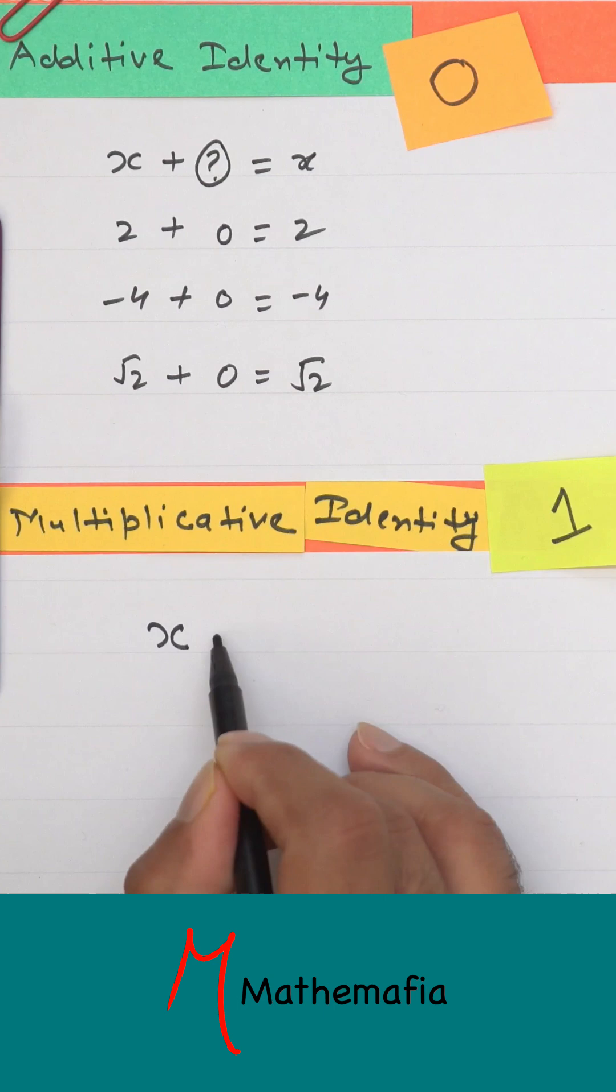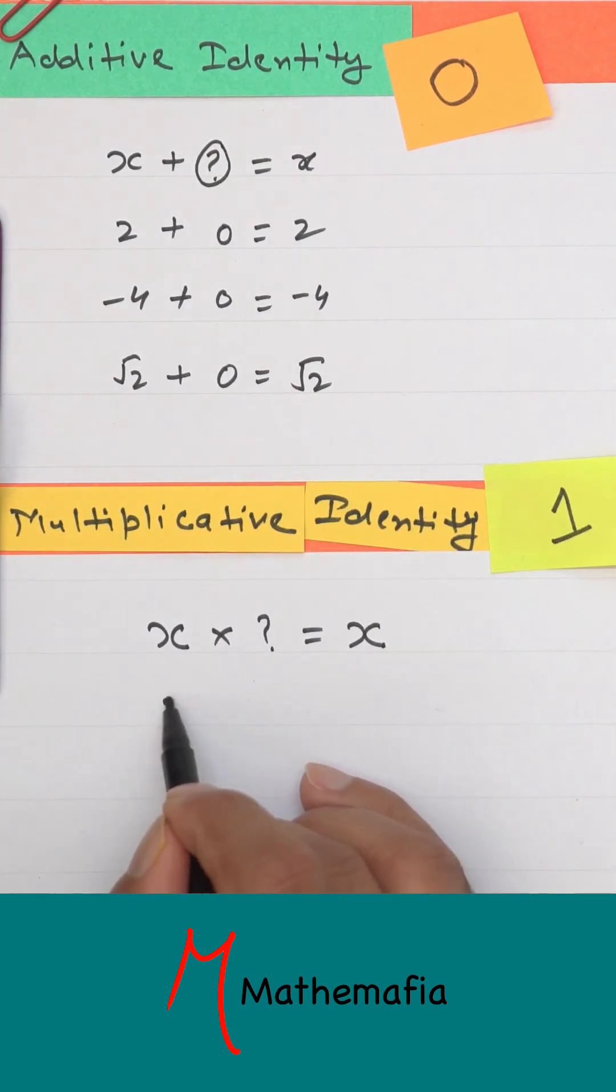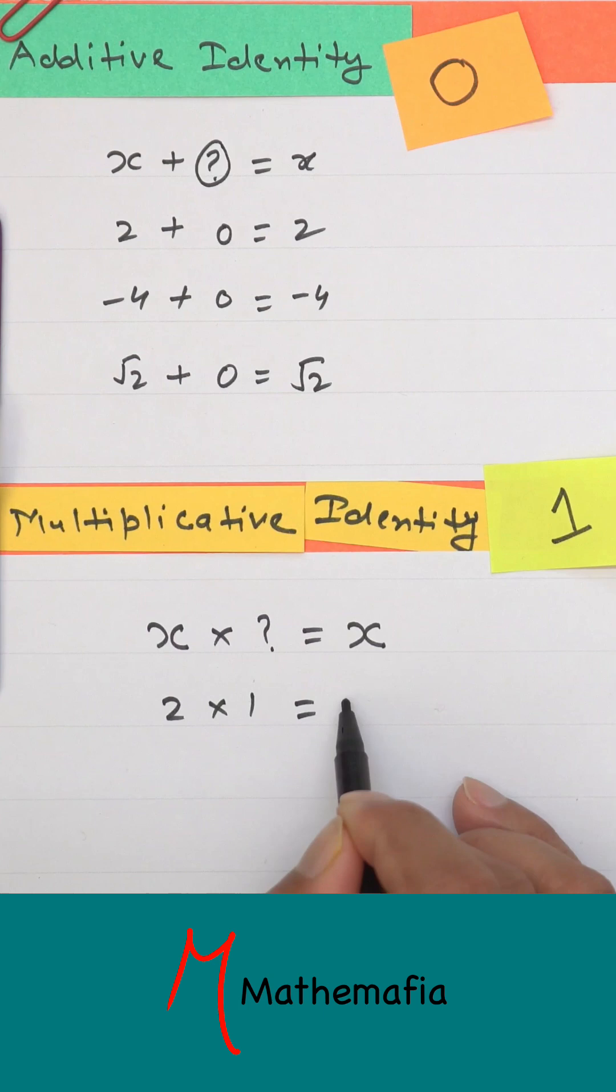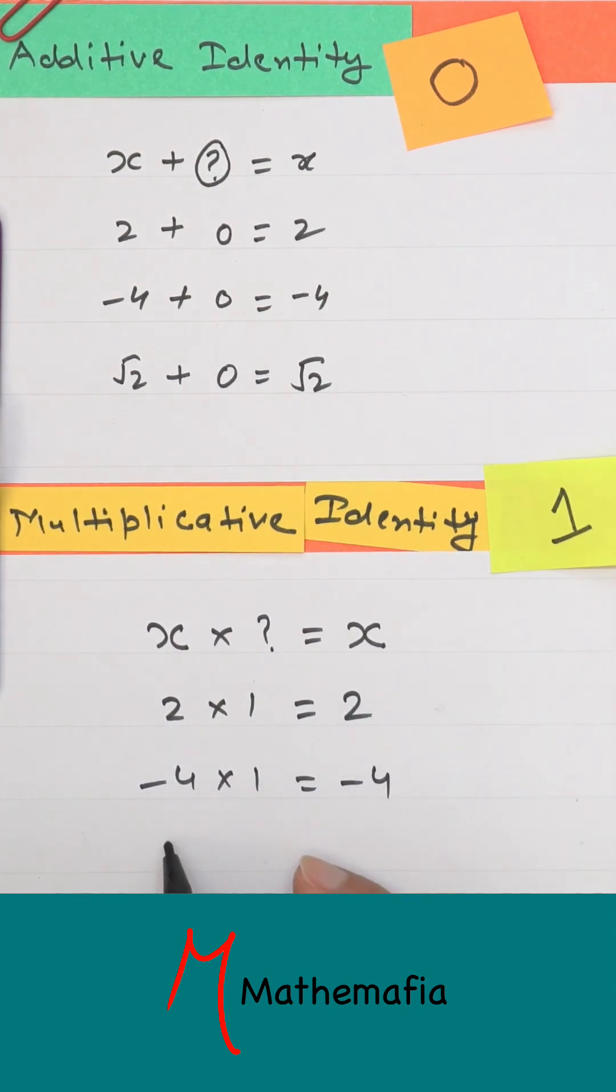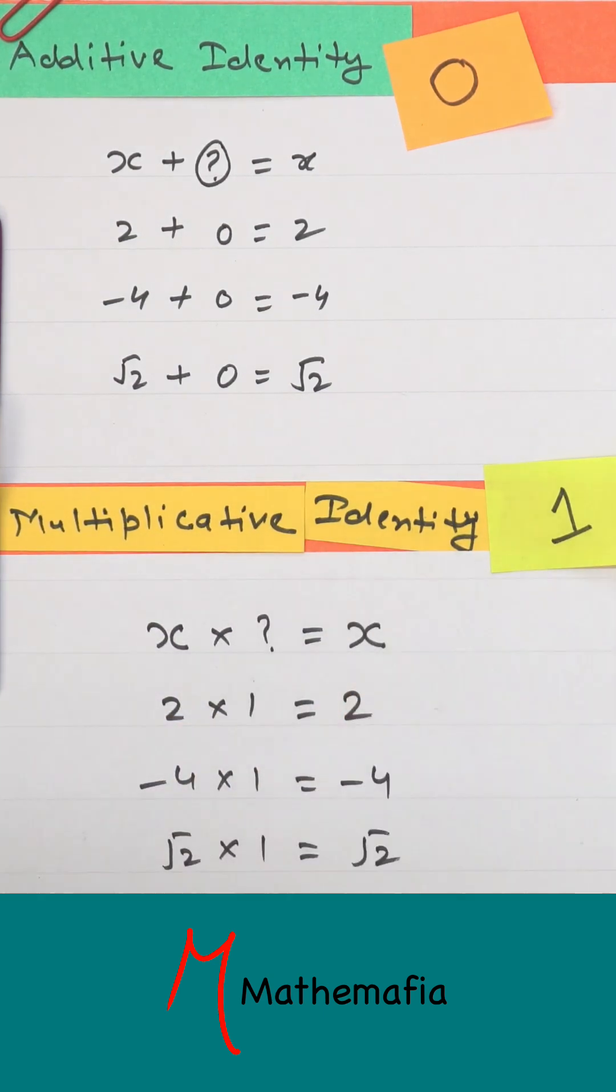This means, what should any number, say x, be multiplied by to get x again? For example, multiplying 2 with 1 results in 2. Multiplying -4 with 1 gives -4. And similarly, multiplying √2 with 1 results in √2 again. Hence, 1 is the multiplicative identity of all numbers.